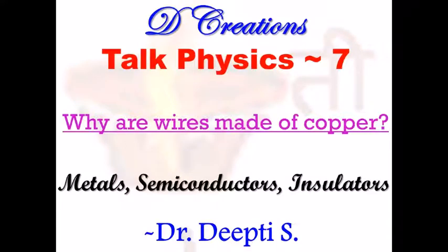Hello, I am Deepti and I welcome you to the 7th episode of Talk Physics. Have you ever wondered why only certain materials are used for specific applications? Like for example, you see copper strands being used in a wire. Why do you use copper there and not some other material like wood? The answer lies in the fact that properties of materials determine their applications, or in other words, applications depend on the properties of materials.